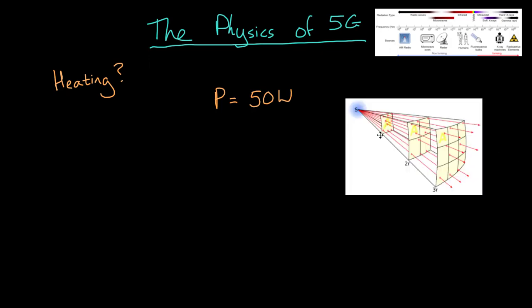This is called the inverse square law. As our distance from the mast doubles, the intensity of the radiation gets four times lower because it is now being spread over a bigger area. Intensity is equal to the power divided by the area that it is spread over. And since it's spreading out in all directions around the mast, that area is actually the area of a sphere. So we can say that the intensity is equal to the power divided by four pi multiplied by the radius squared, which is how far away from the mast you are.